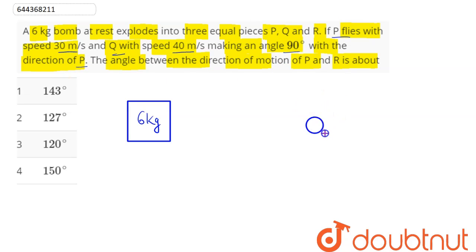So we can see here, suppose this is our P, so here this Q makes an angle of 90 degrees with P. So P flies with speed 30 m/s. Again, the Q particle will fly off with speed 40 m/s, making an angle 90 degrees with direction of P as mentioned.